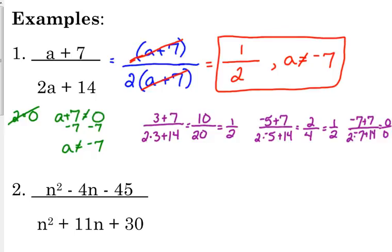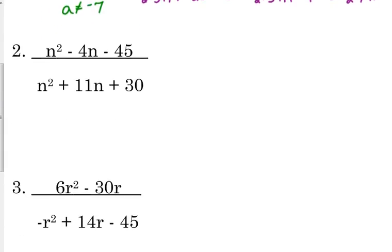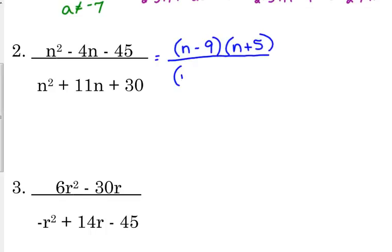You don't have to go through that numerical verification for every problem — you can do it to check your work, but I'm just showing that the expressions are equivalent. Now let's look at number two: (n² − 4n − 35) over (n² + 11n + 30). We factor the numerator into (n − 9)(n + 5).